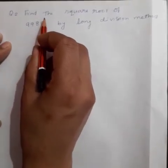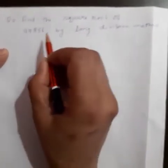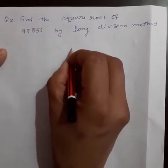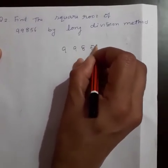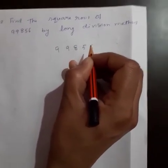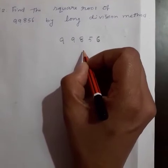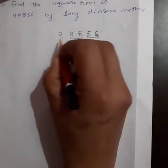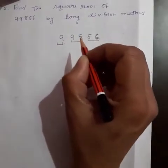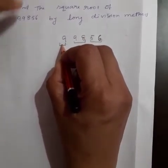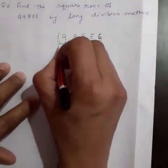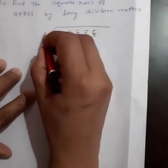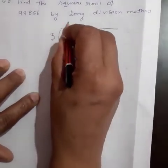Let's solve another question: Find the square root of 99,856 by long division method. Write the number here. Mark off the digits in pairs starting with the ones digit. Take the first period starting from the left, that is 9. We know that 9 is a perfect square and 9 is the square of 3. So 3 is the divisor as well as the quotient.